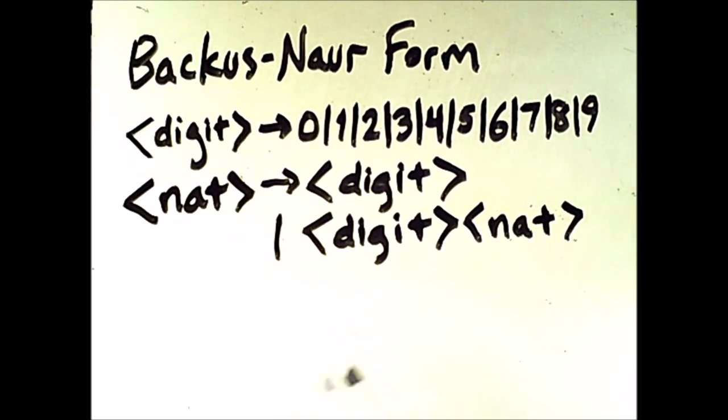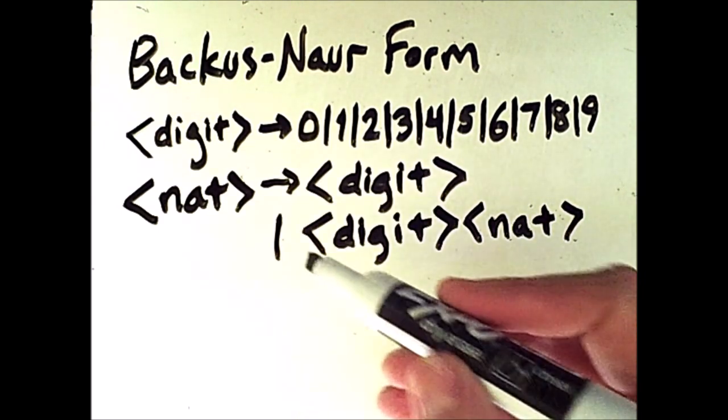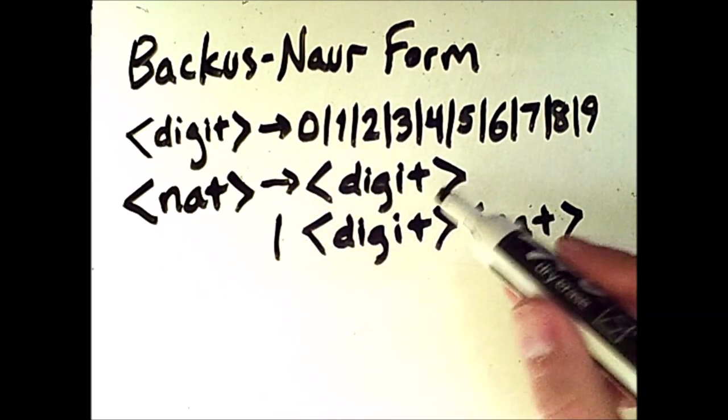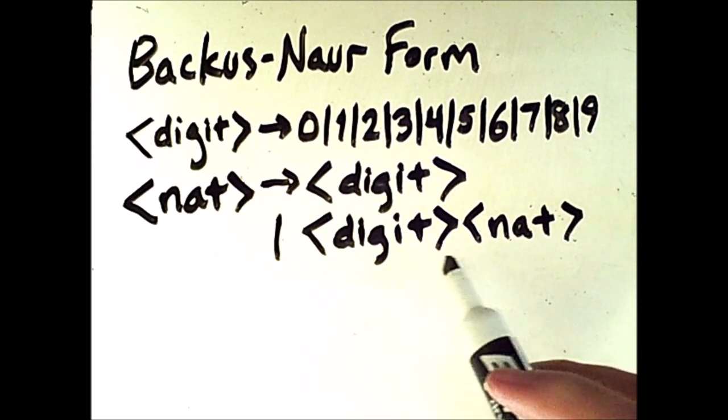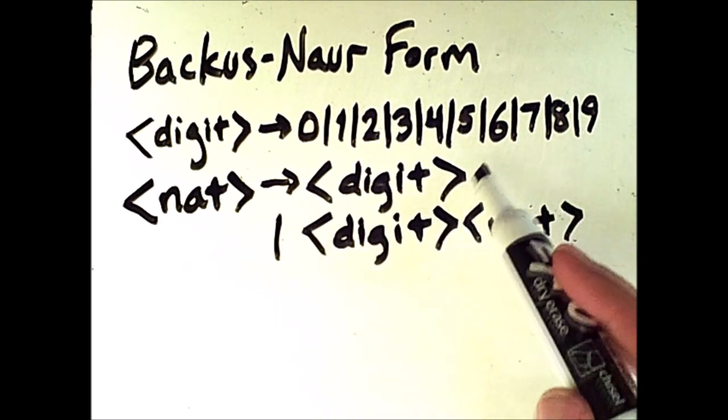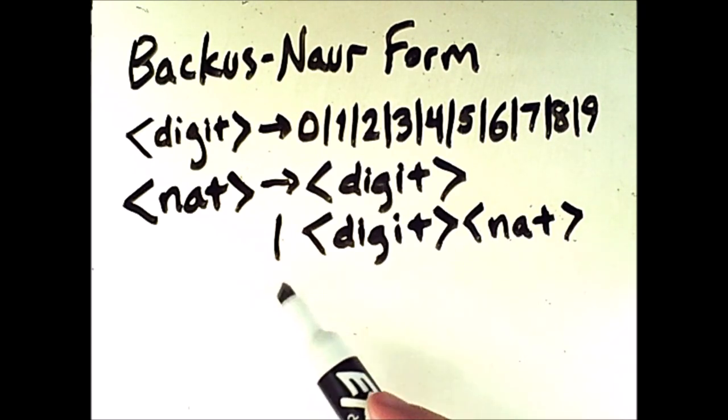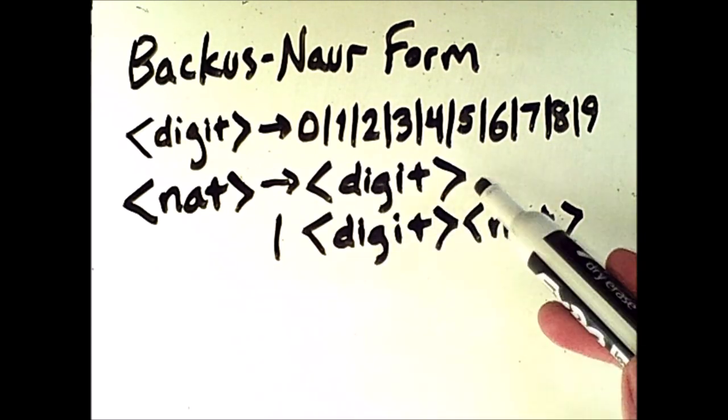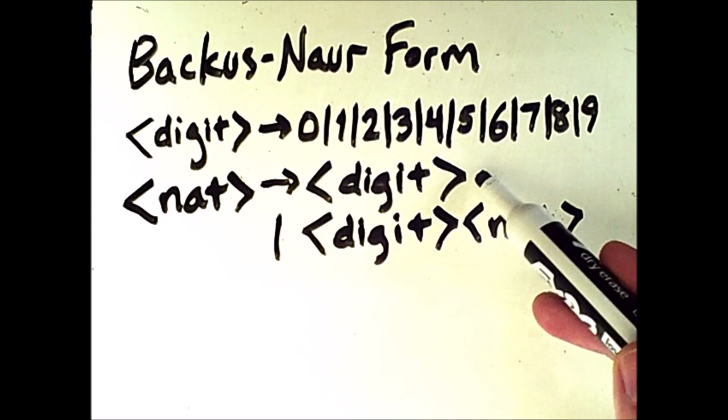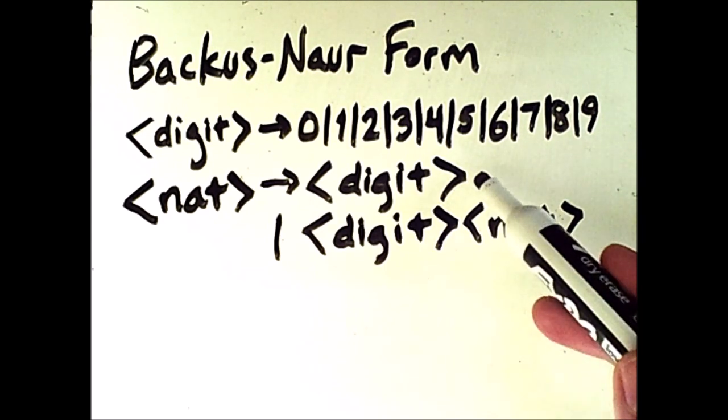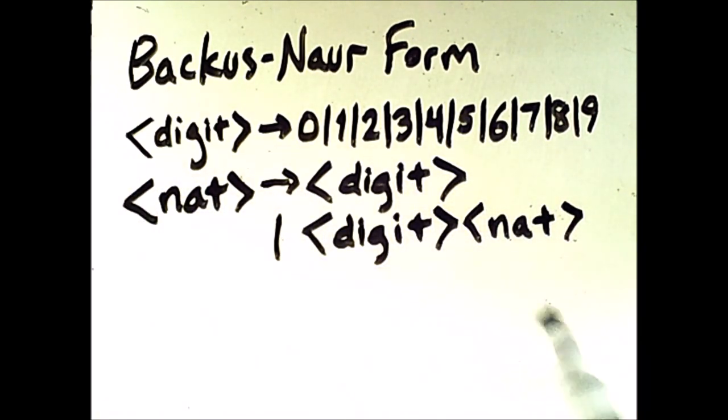So a natural number can be one of two things. Notice we still have a vertical bar, but because this wouldn't fit nicely on one line, the vertical bar is starting the new line, but it still means OR. So a NAT is either a digit, which is a non-terminal, but we can find out what a digit is by looking at this other rule, or a NAT is a digit followed by a NAT.